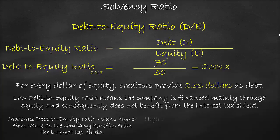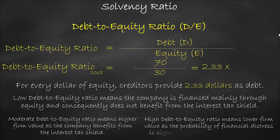A high debt-to-equity ratio means a lower firm value as the probability of financial distress is higher with more debt and less equity.